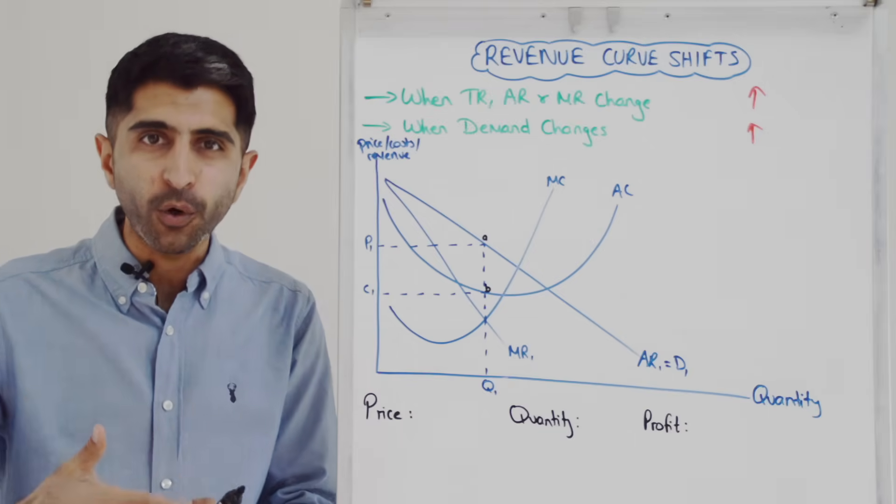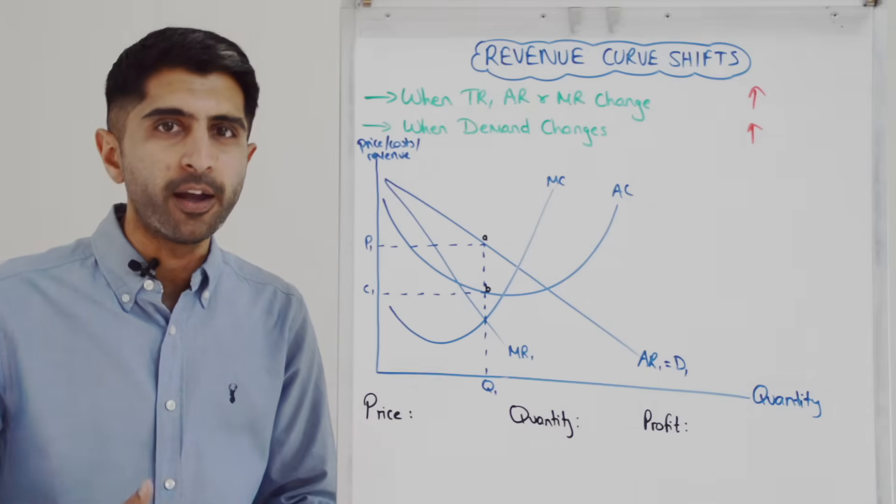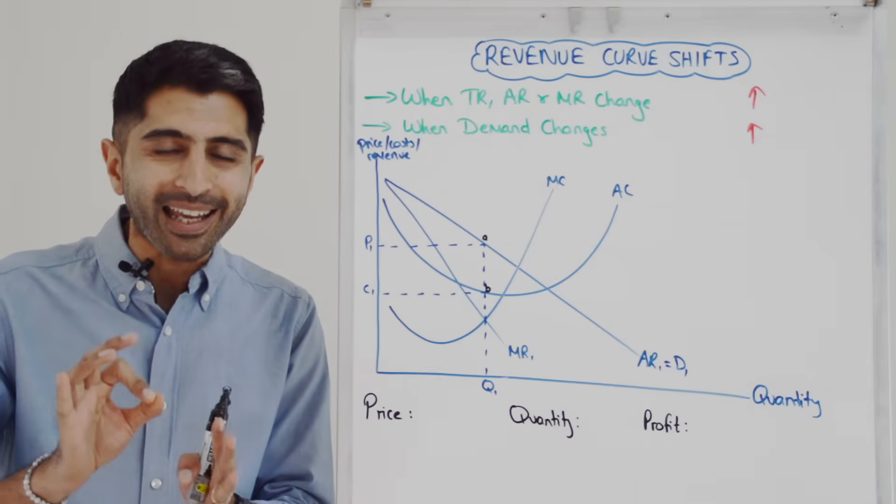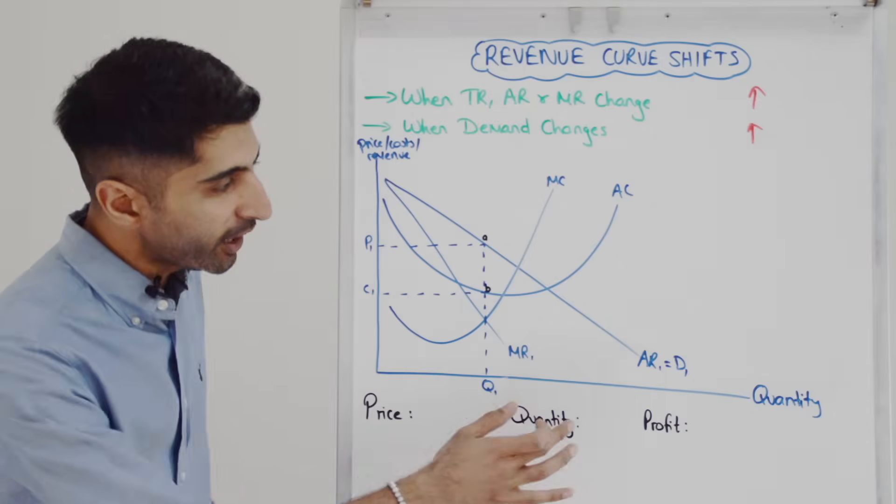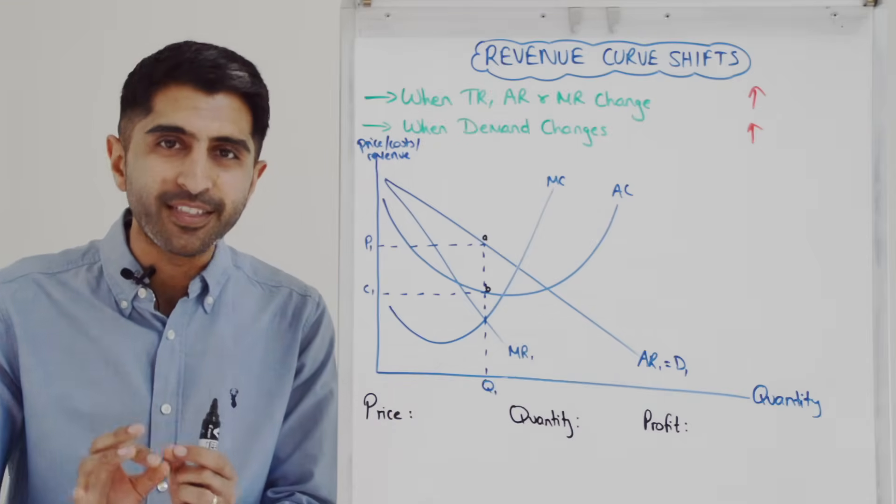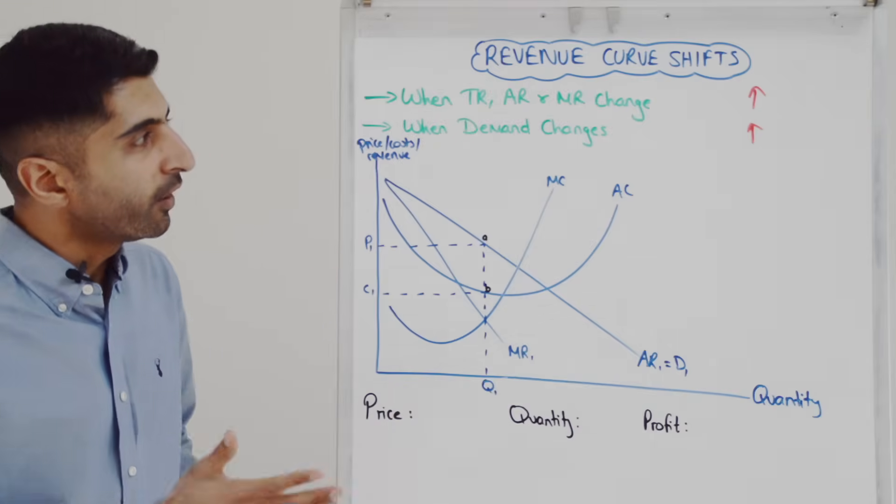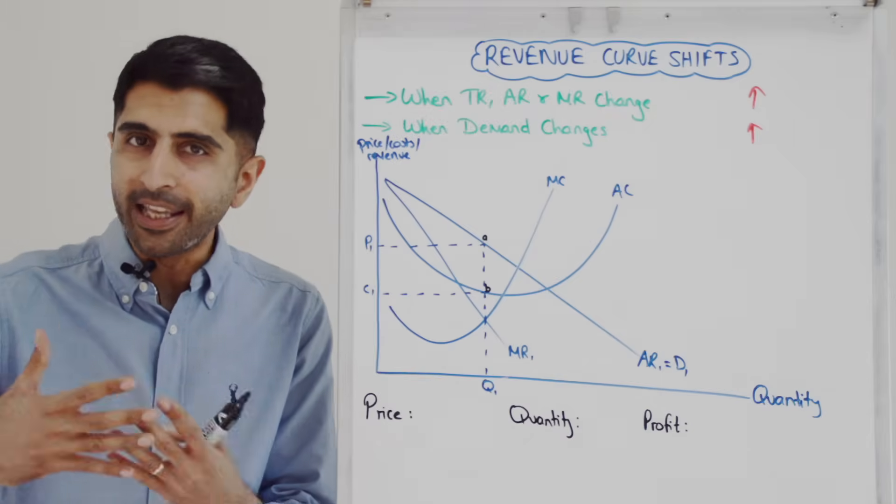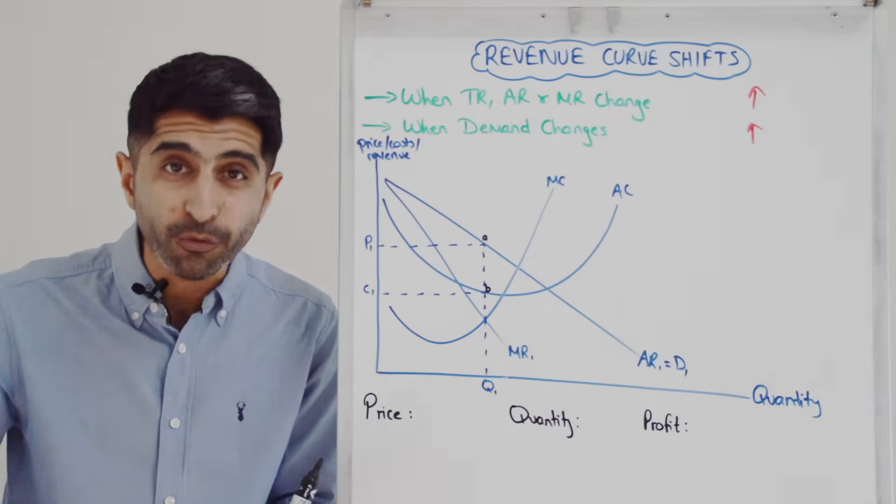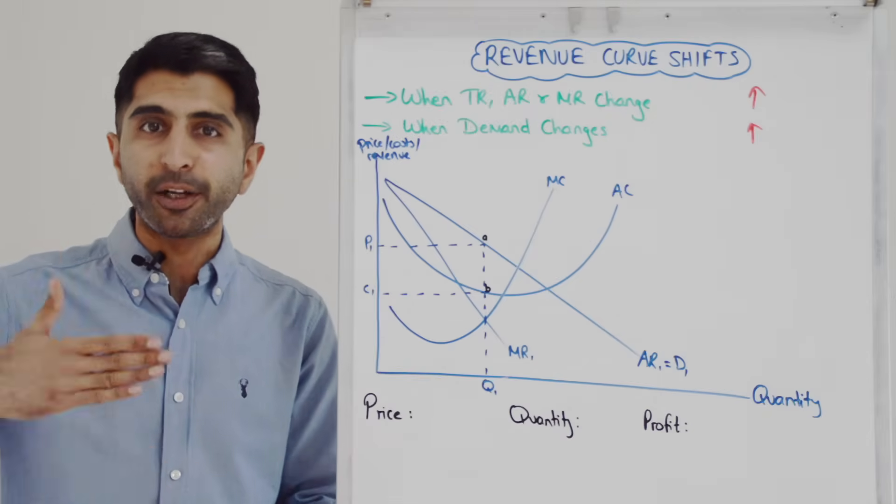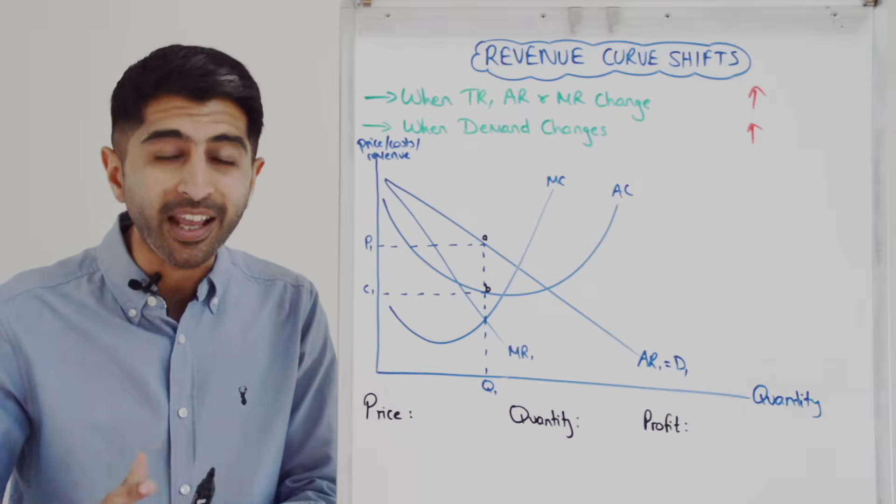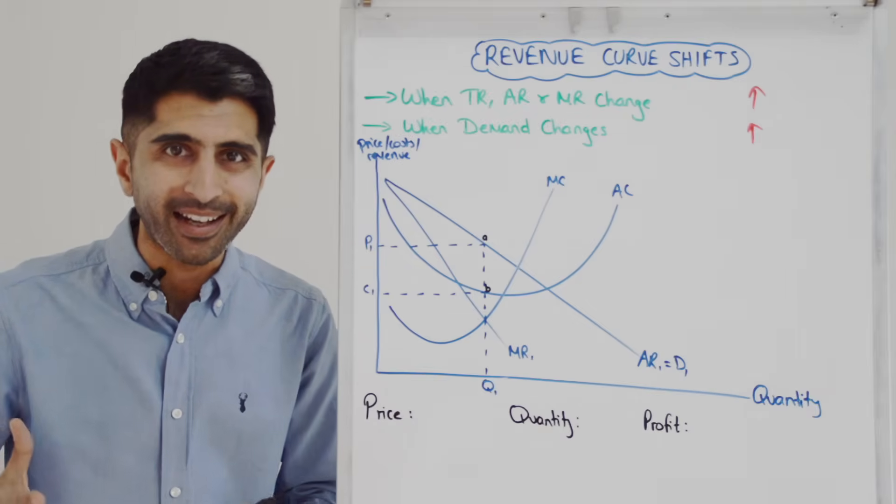You can then show that by shifting revenue curves, or you can link the revenue curves for a firm to demand, because we know that average revenue is the demand curve for a firm. So when demand changes, you can illustrate that by shifting your revenue curves, remembering that your revenue curves are basically demand curves.